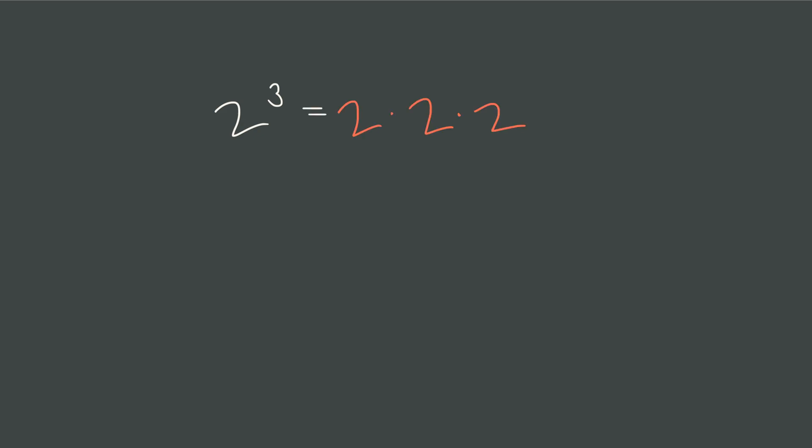When you see 2 to the 3, you know exactly what to do. You multiply the base 2 by itself 3 times and you get 8. But what about this one? What is 2 to the negative 3?